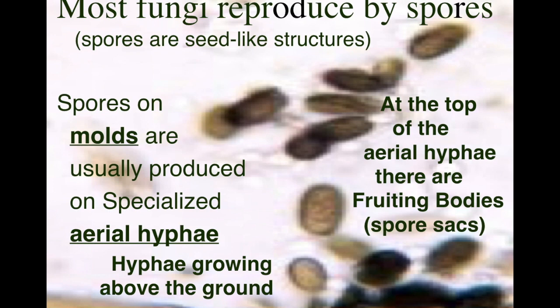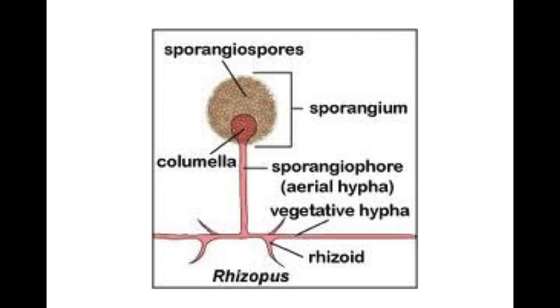When mold grows — especially black bread mold — and it grows up and out of the bread, the individual hypha or strand is called aerial hypha because it's growing up in the air. At the top of aerial hypha, you usually have a spore sac called a fruiting body, or a sporangium. Here we can see the aerial hyphae growing above the bread, and at the top the sporangium contains all the spores — that's the fruiting body. Remember, fungi do not have seeds; they have spores.